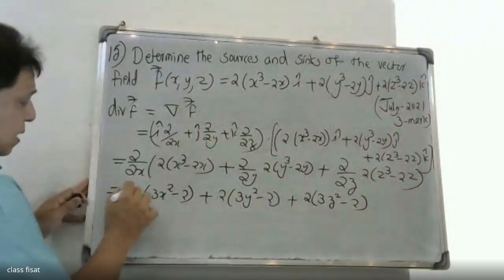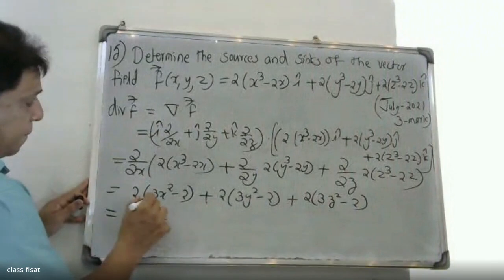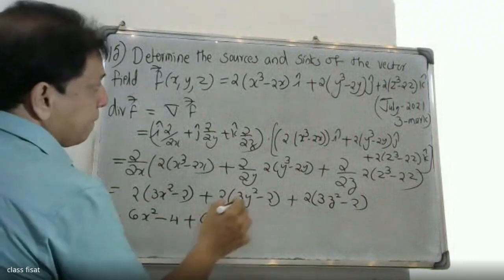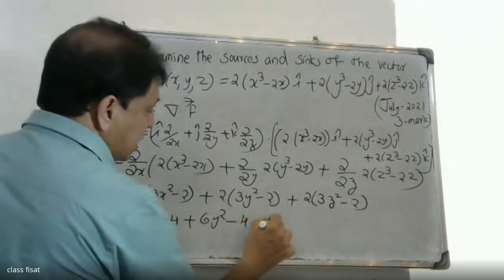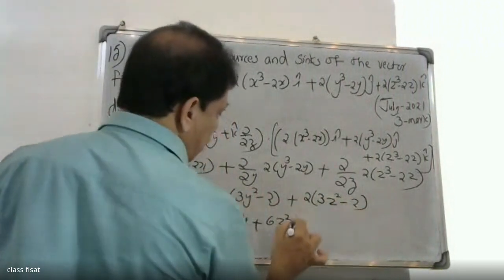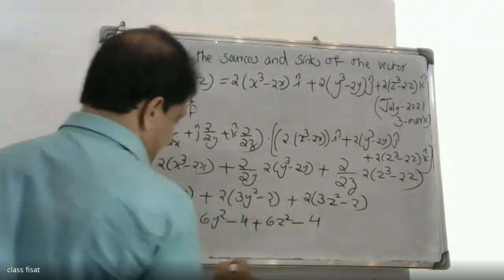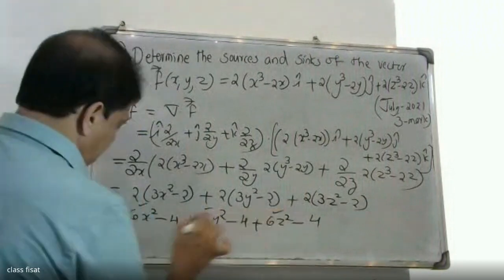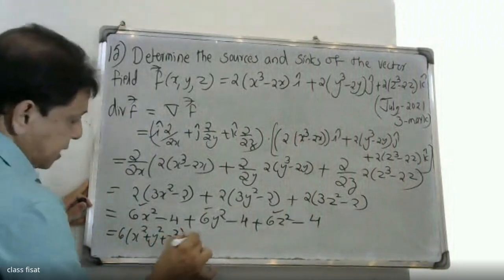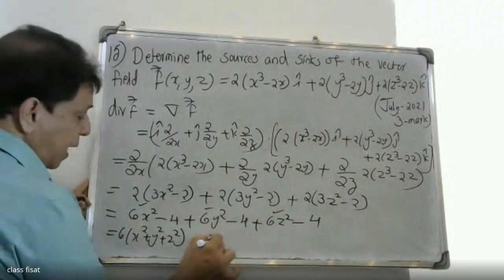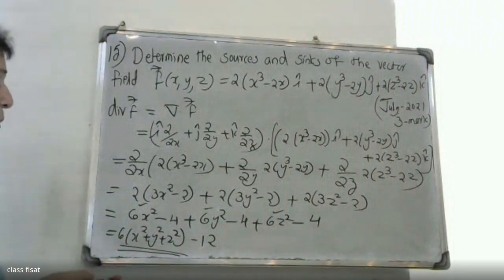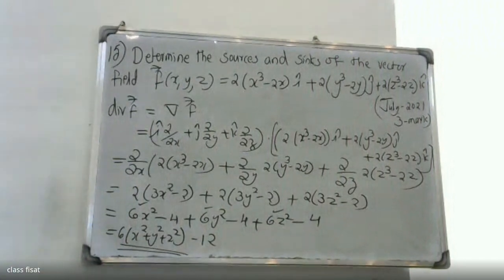That gives us 6x² minus 2 plus 6y² minus 2 plus 6z² minus 2, which simplifies to 6(x² + y² + z²) minus 12.